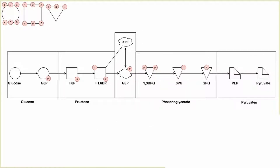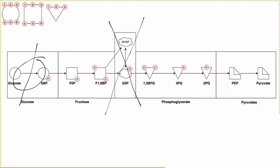The last thing I want to mention is the irreversible steps in glycolysis. Each of the boxes that have two metabolites in them — with the exception of dihydroxyacetone phosphate and G3P — are the irreversible steps. Glucose to glucose-6-phosphate is irreversible (glucokinase/hexokinase). Fructose-6-phosphate to fructose-1,6-bisphosphate is irreversible (PFK1). And PEP to pyruvate is also an irreversible step driven by pyruvate kinase.